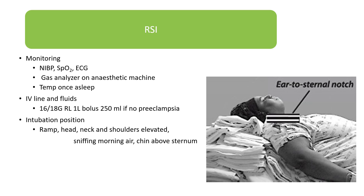Full monitoring must be applied and in working order. Pre-oxygenate the patient — remember the decreased FRC in these patients means you can expect rapid desaturation, so you want to maximize the oxygen in the FRC. Rapid sequence induction is performed because of the high risk of aspiration. Cricoid pressure must be applied to prevent passive reflux before the ET tube is secured and checked for correct position.